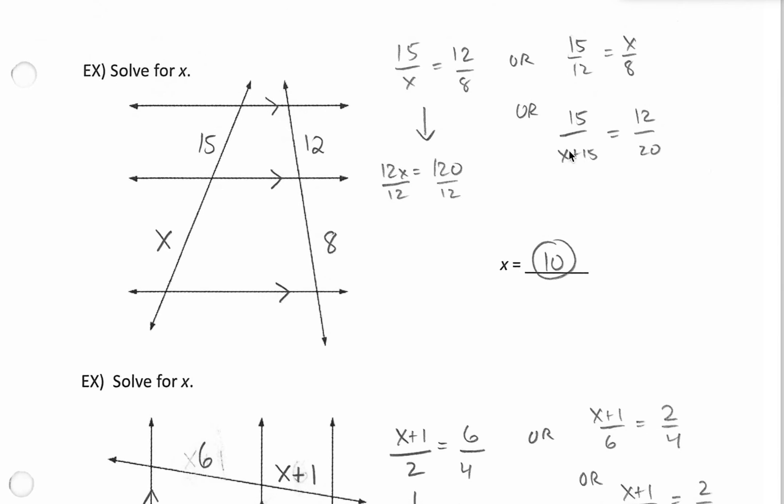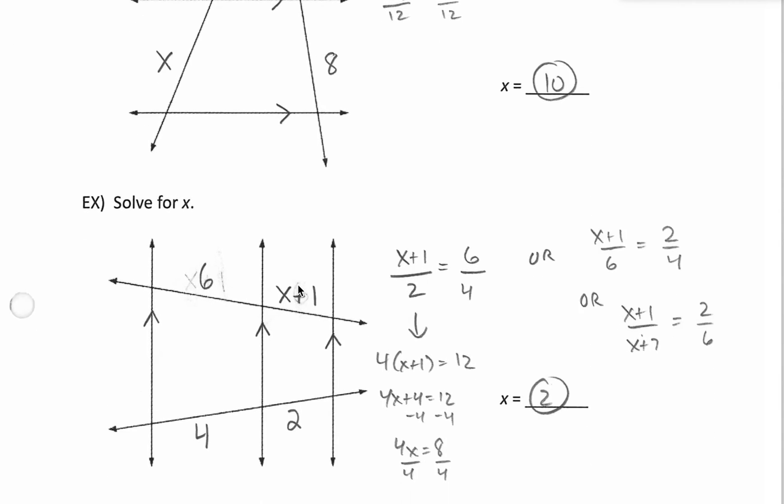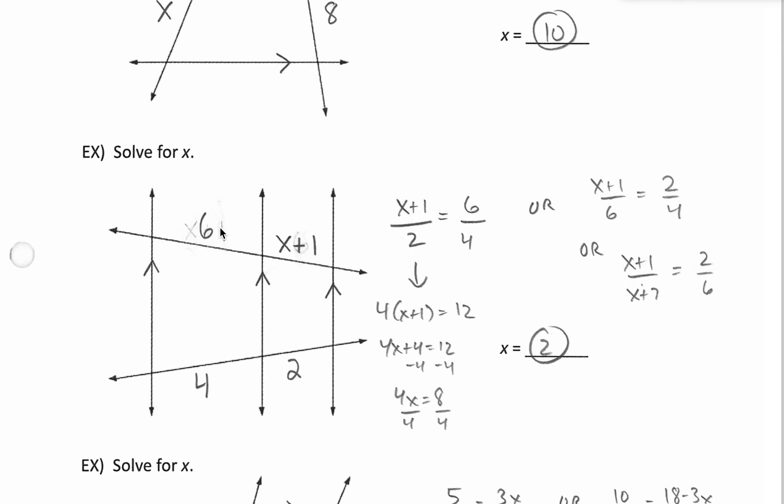Other options we could use if you chose to. And the next example. Here we could compare. Let's go right to left on the top. X plus 1 to 6. So we would go right to left on the bottom. 2 to 4. So there's one.